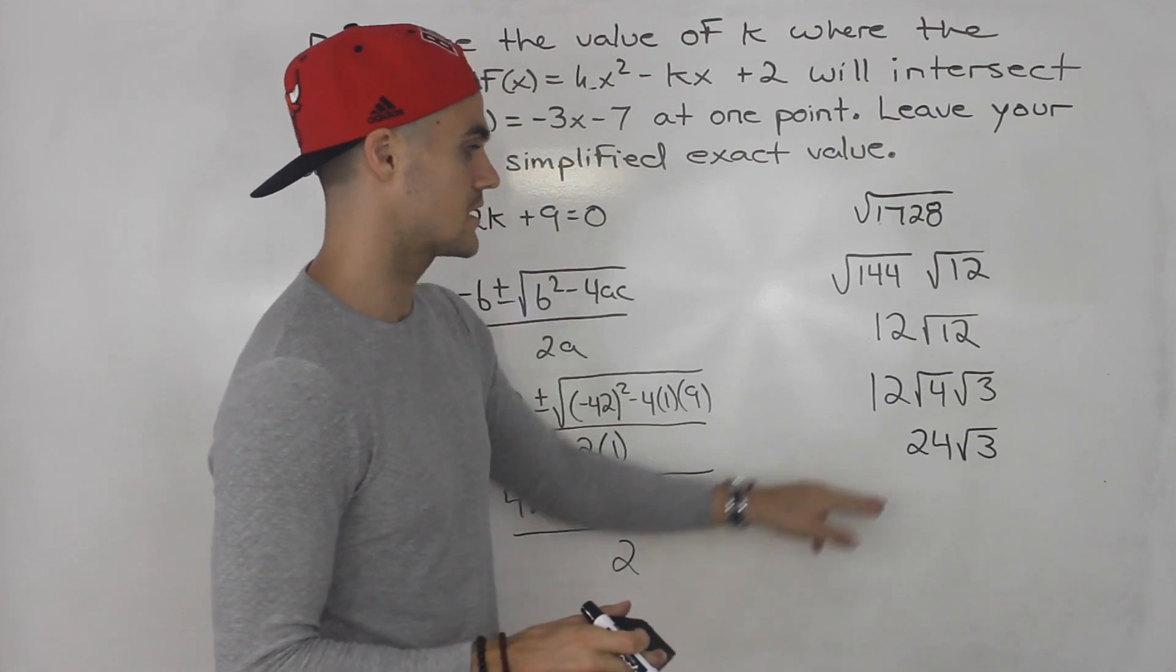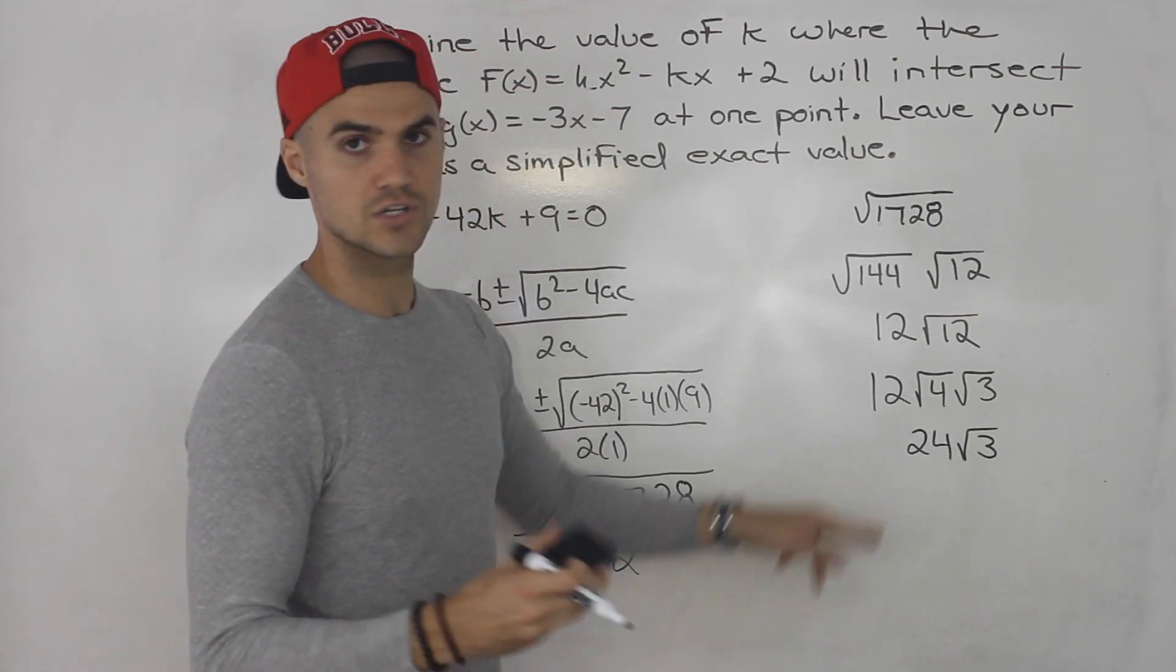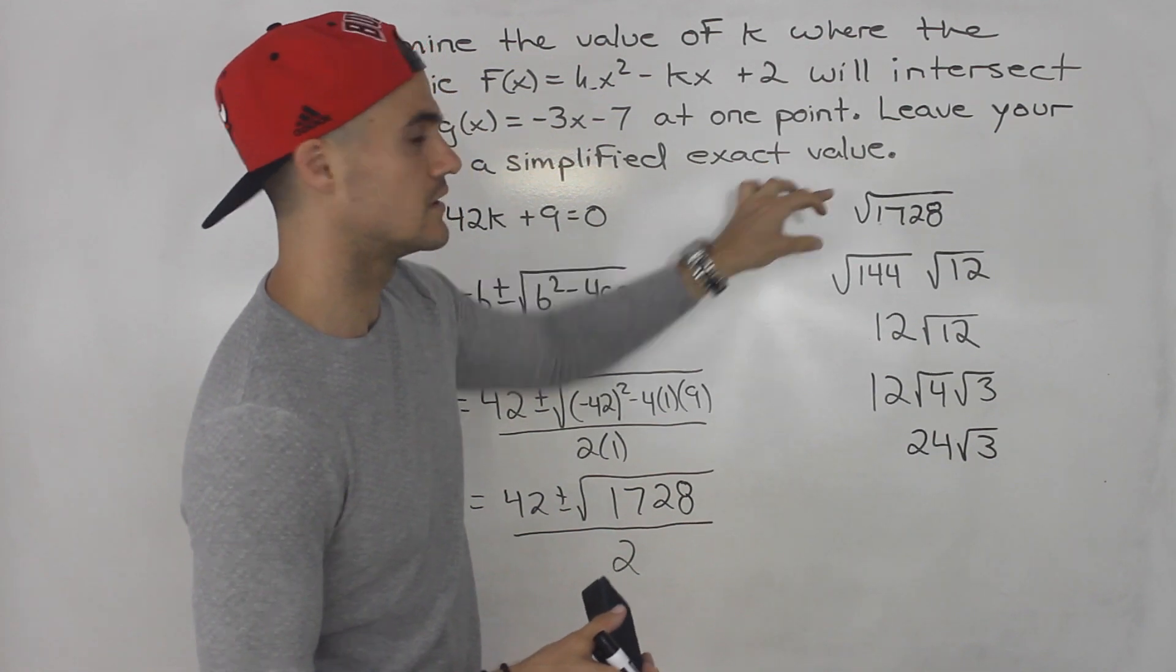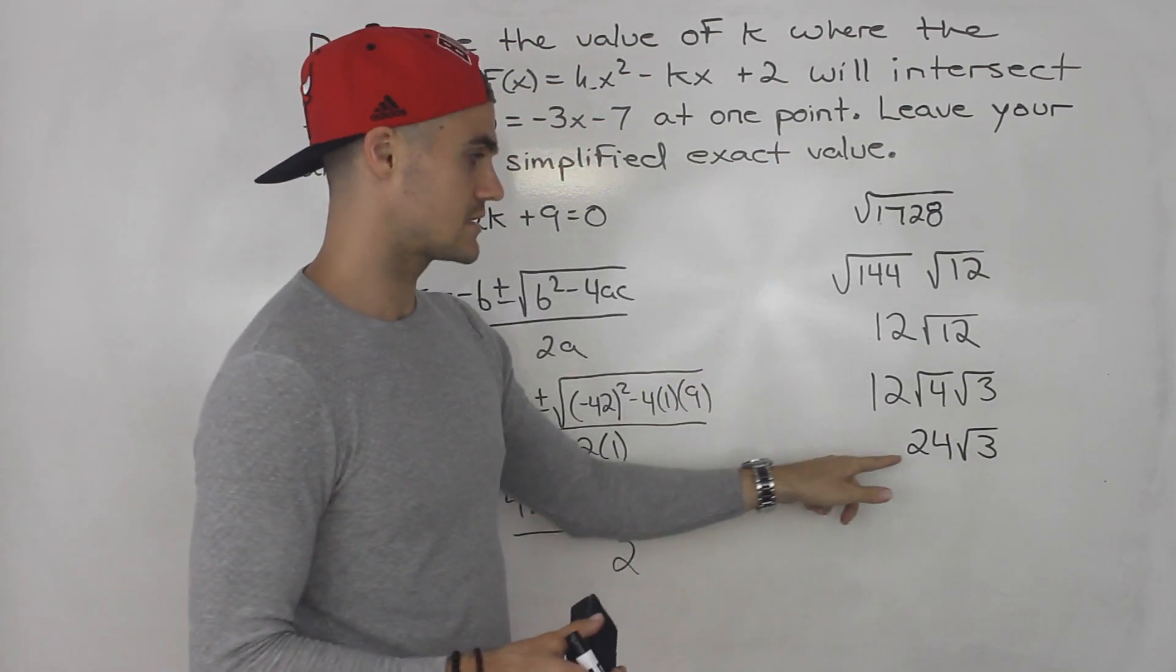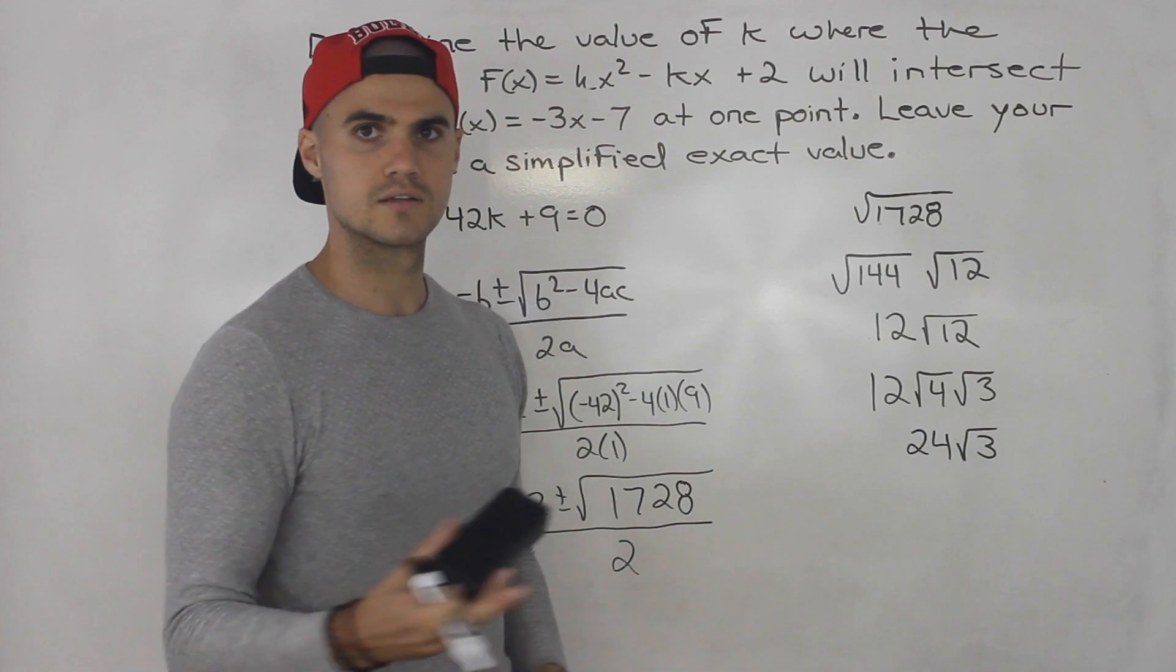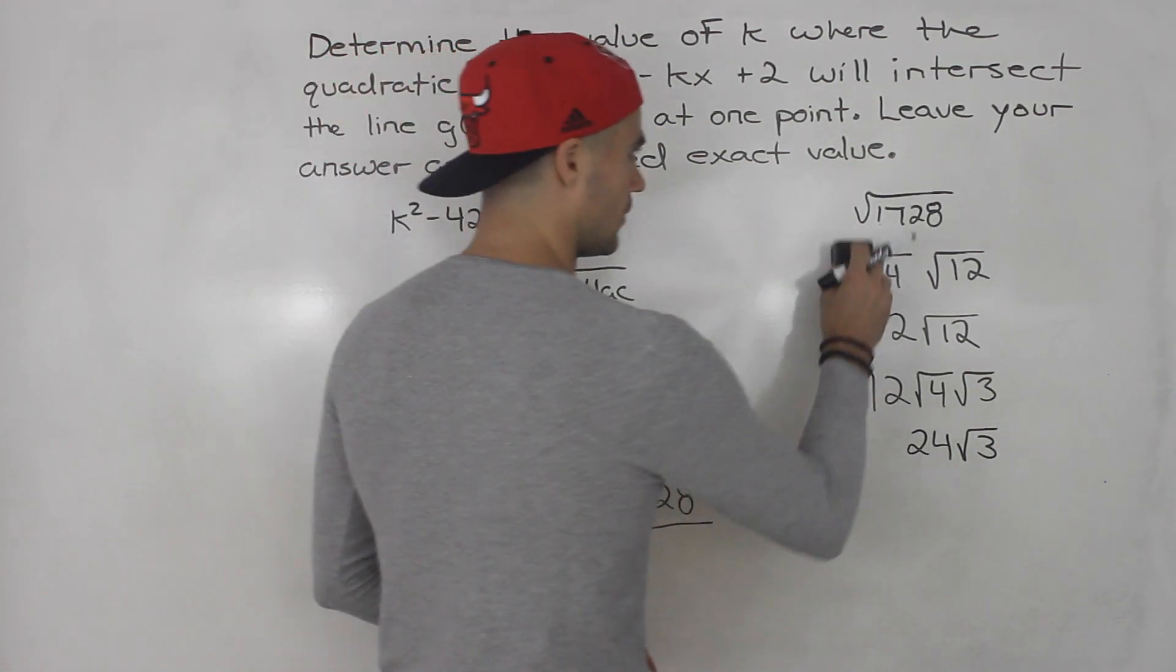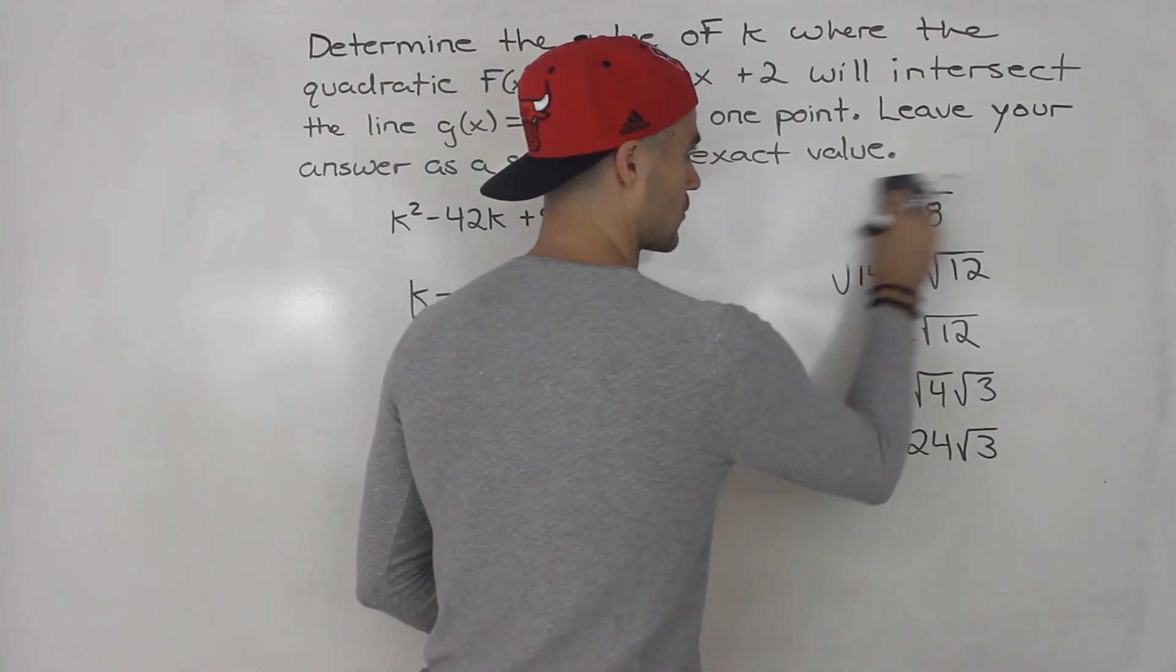So root 1728 simplifies to 24 root 3. So no matter which route you take, that should be your final answer. You could check your answer in your calculator too. You could take the square root of 1728, see what that decimal number is. Then take 24 root 3. Same decimal number.